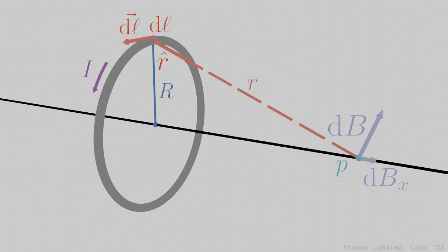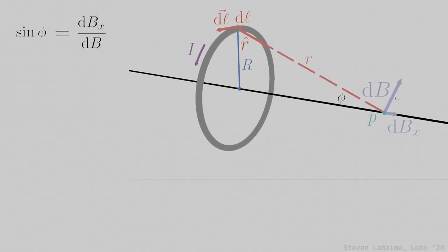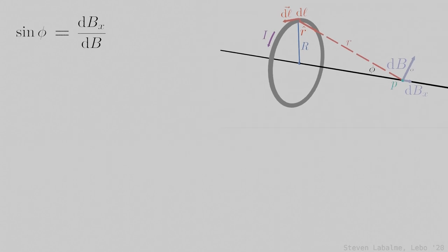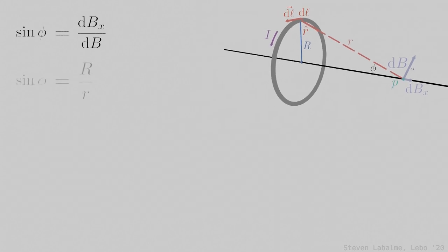Arbitrarily choose to consider this angle, which we will call phi. Note that phi is also present here. Thus, we can write that sine phi equals dBx over dB, and that sine phi also equals big R over little r.